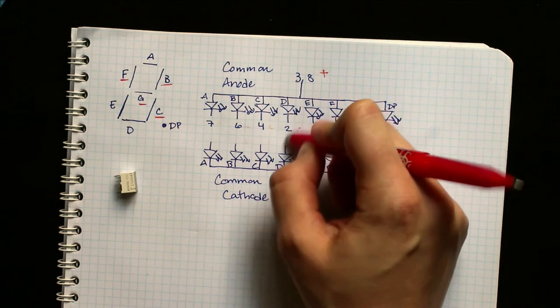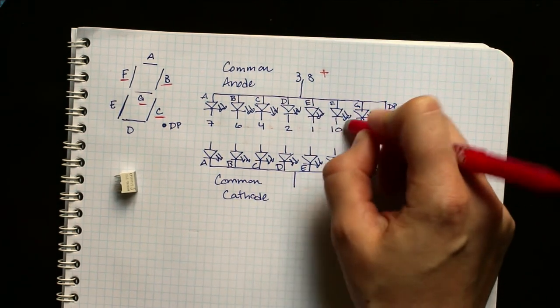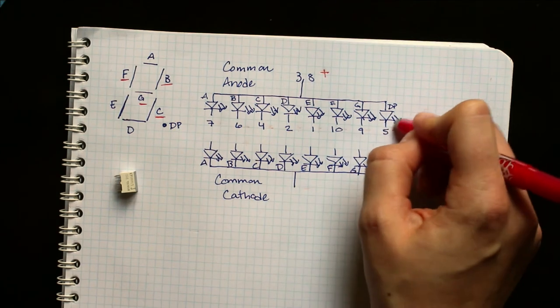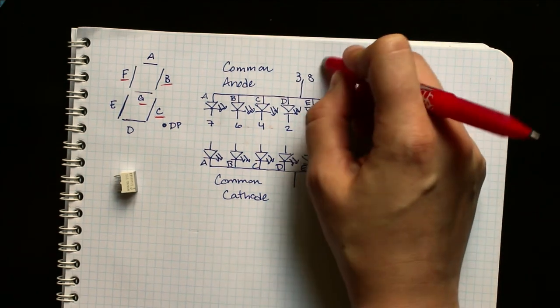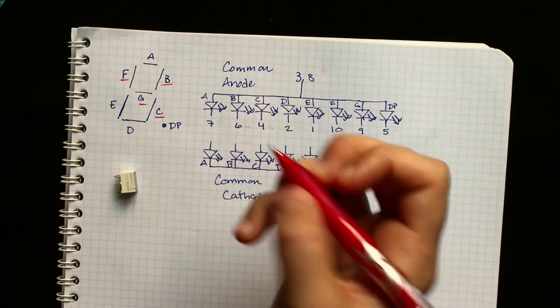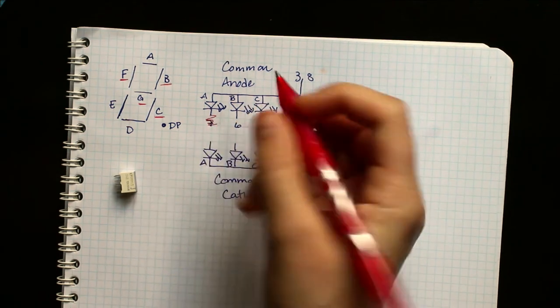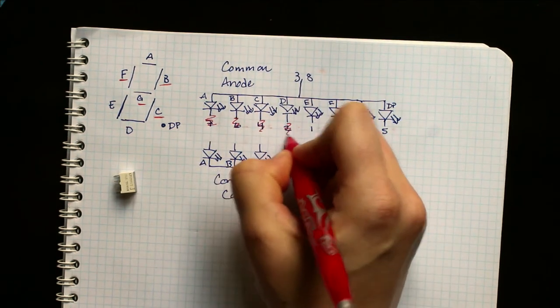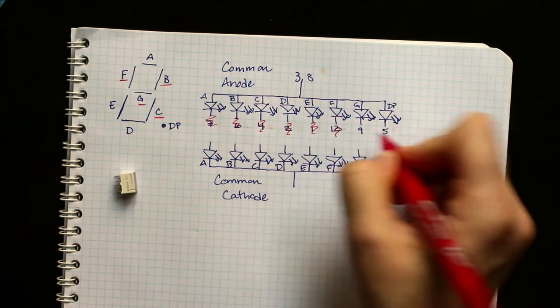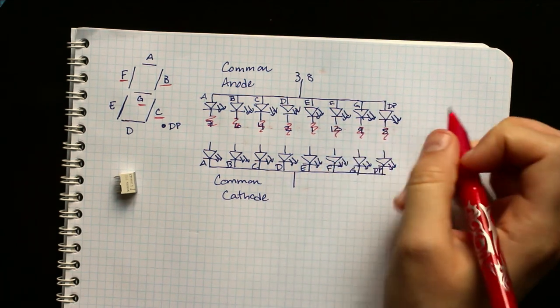Additionally, when you design your PCB, because these are LEDs, they have a maximum voltage that should be across the LED. So you want to connect a resistor at this location in all of the segments.